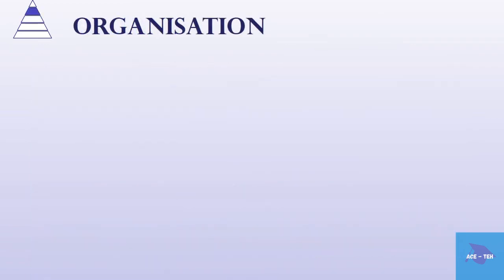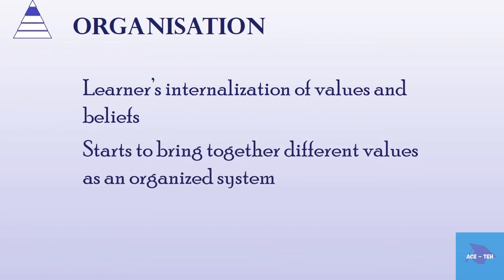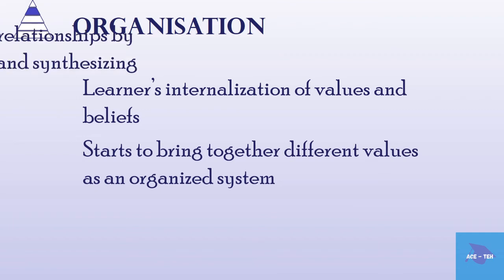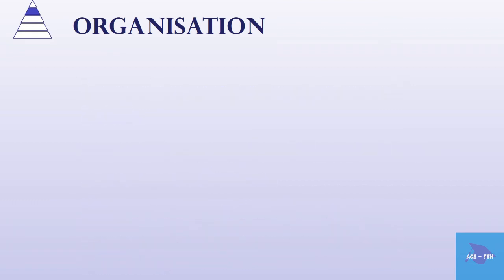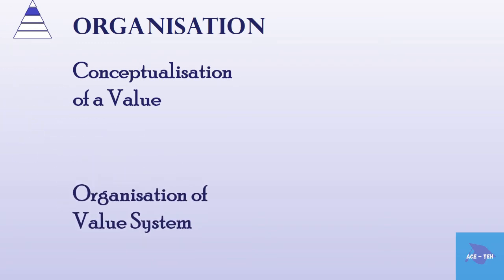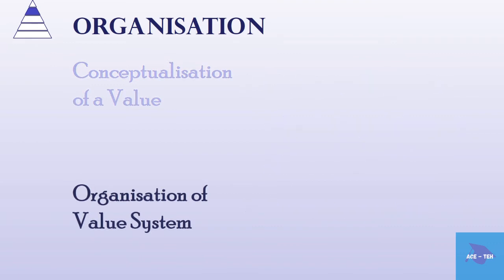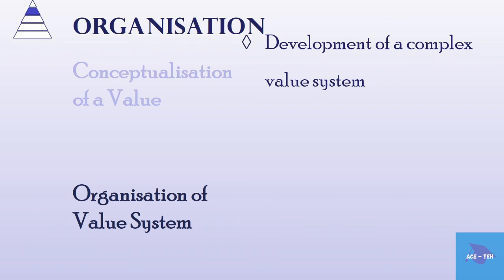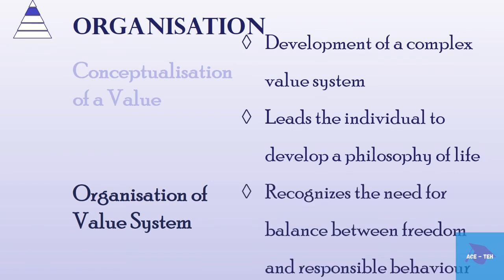The fourth level is organization, referring to the learner's internalization of values and beliefs. Here the learner starts to bring together different values as an organized system, determining their interrelationships by comparing, relating and synthesizing values. There are two sub-levels: conceptualization of a value, which involves understanding the relationship of abstract elements of a value; and organization of a value system, which involves development of a complex value system. This level leads the individual to develop a philosophy of life, helping him avoid dependence upon others and recognize the need for balance between freedom and responsible behavior.